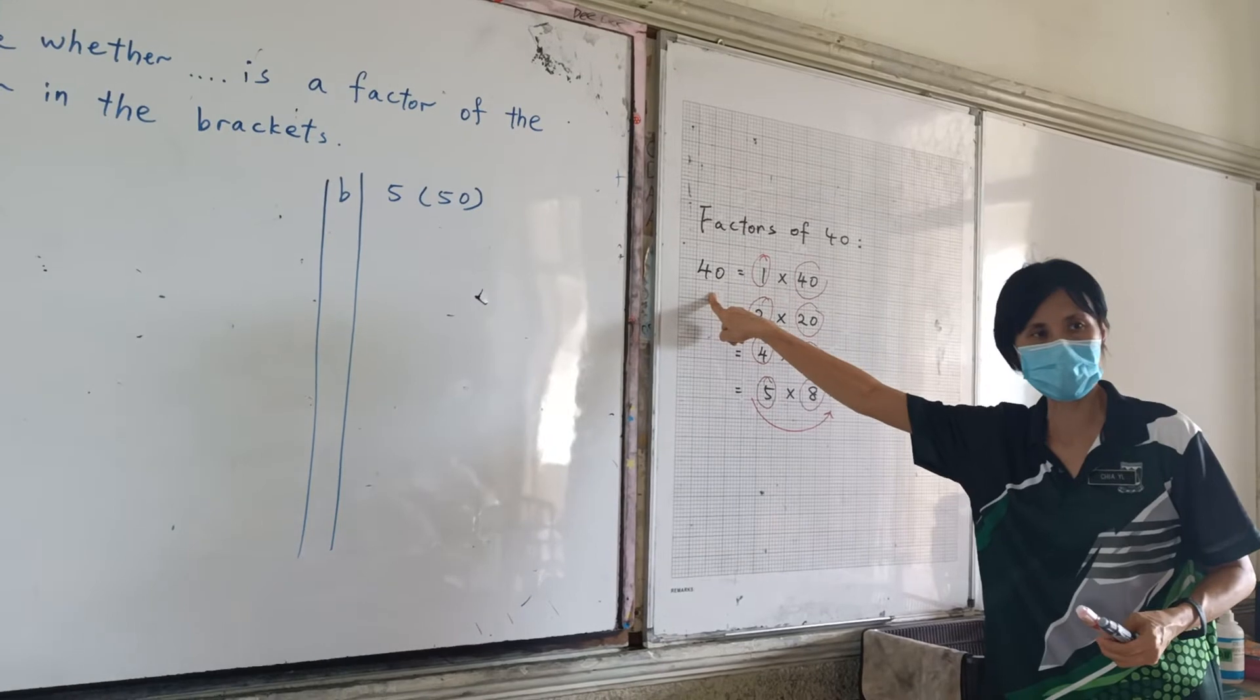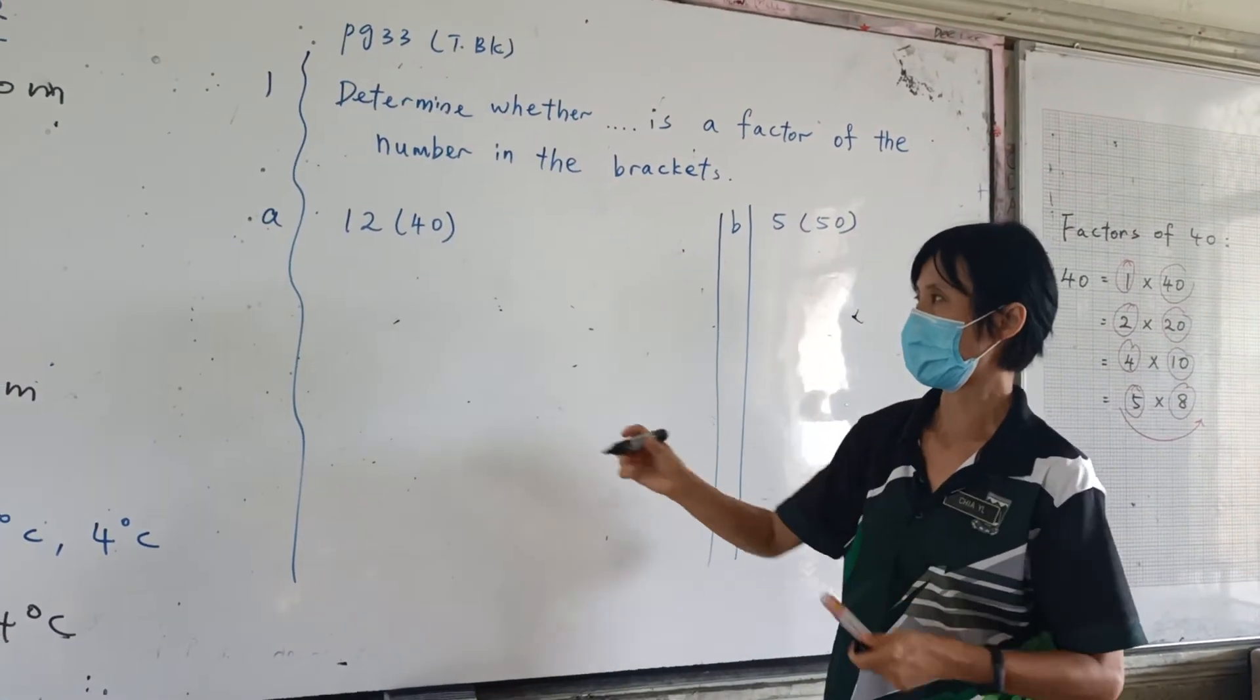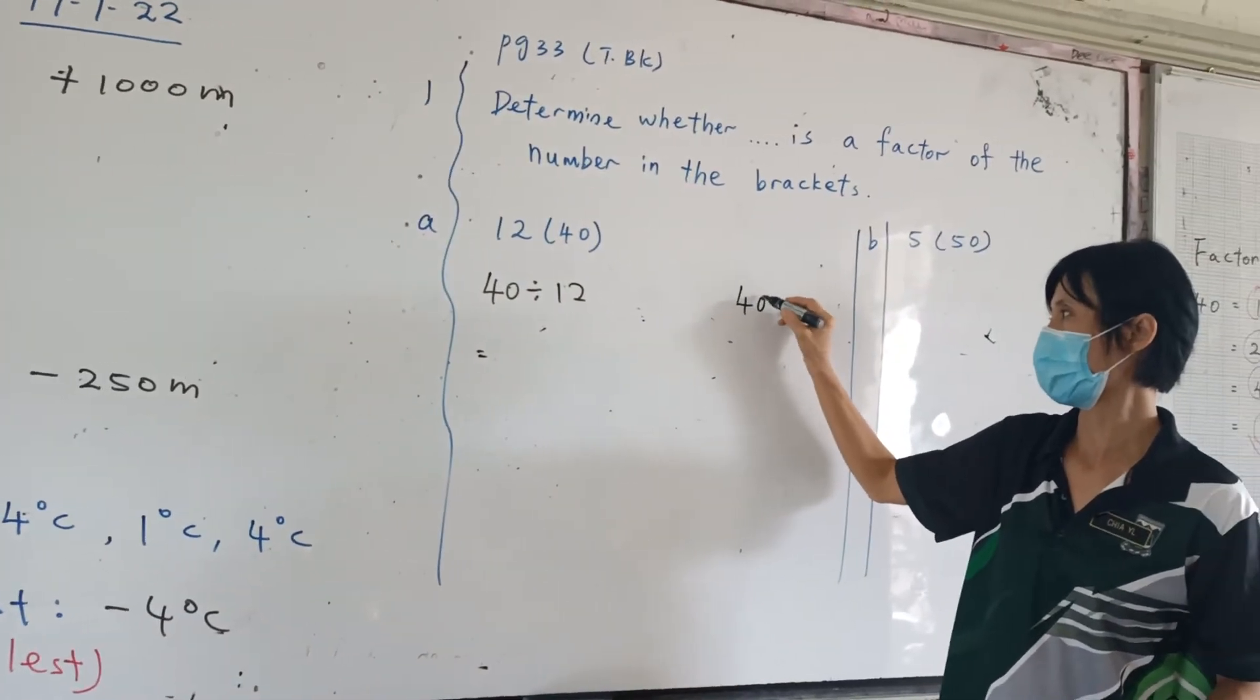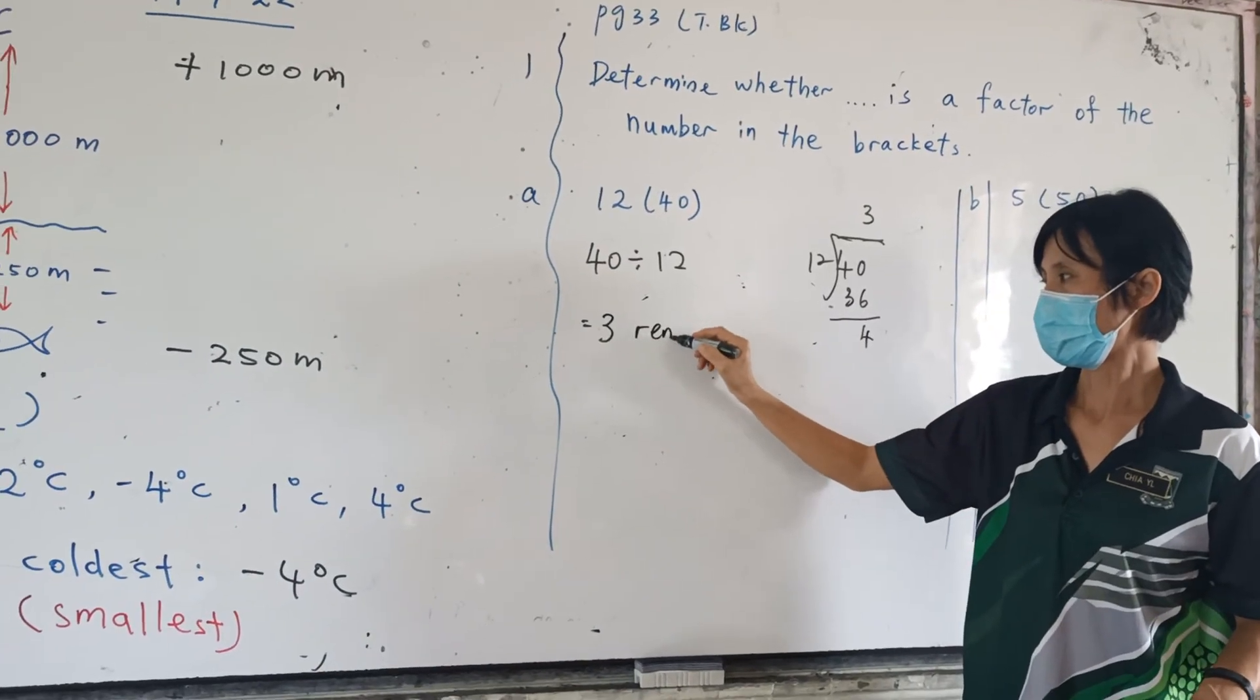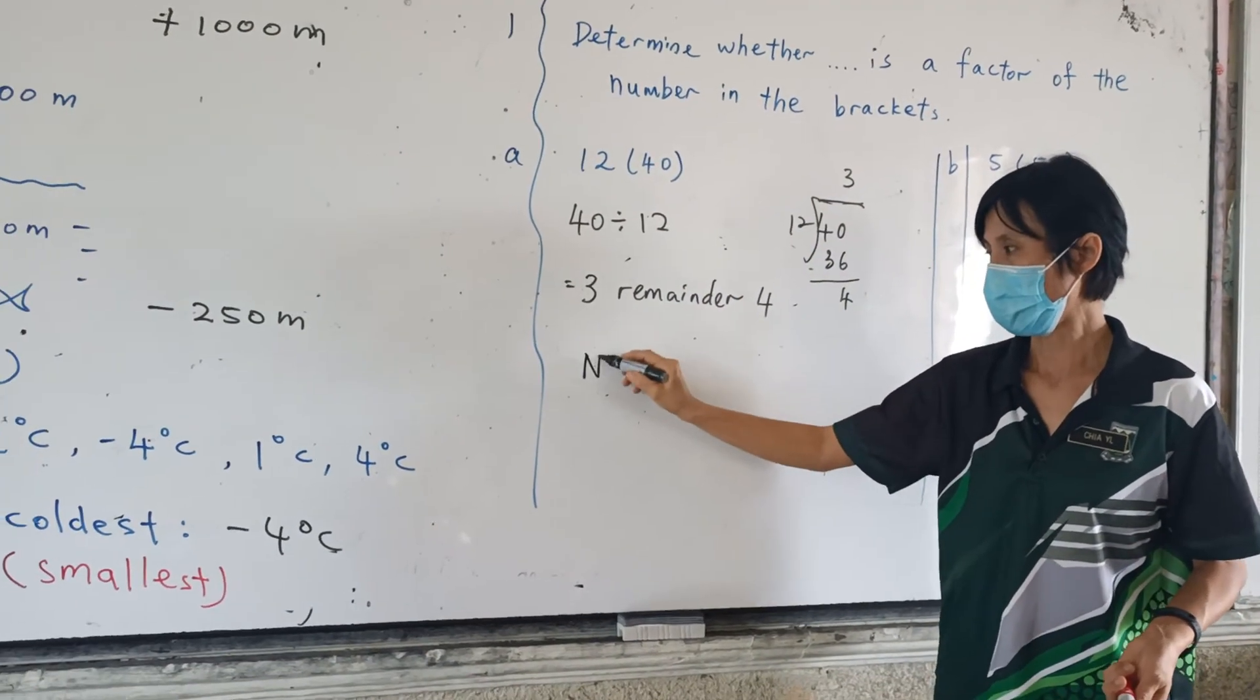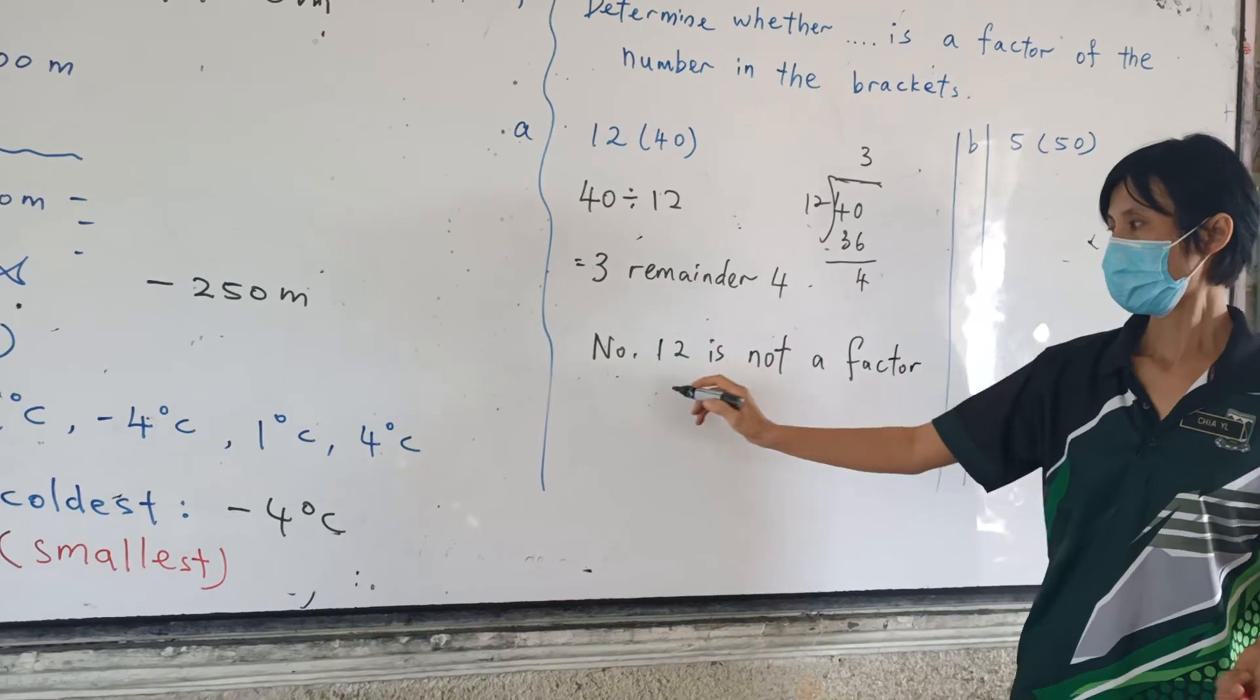When this is a factor of the number here, you divide. Is there any remainder? No remainder. They are only totally divided. No remainder. Is 12 a factor of 40? How to get the answer? Divide. 40 divided by 12. 40 divided by 12, we get 3 times 12 is 36. So, 4 here. We get 3 remainder 4. When there is a remainder, that means, cannot be divided completely. So, 12 is not a factor of 40. No.